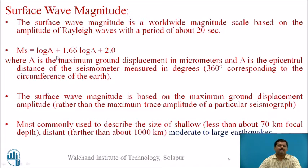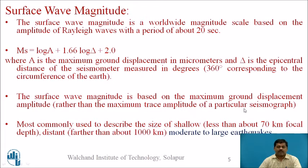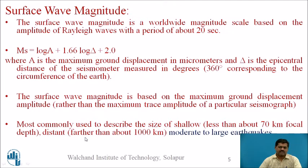By substituting A and Δ, we get the surface wave magnitude. Unlike Richter's scale, surface wave magnitude is based on maximum ground displacement rather than maximum trace amplitude on a particular seismograph. It is most commonly used to describe shallow earthquakes with focal depth less than 70 km, within about 1000 km distance, and for moderate to large earthquakes.